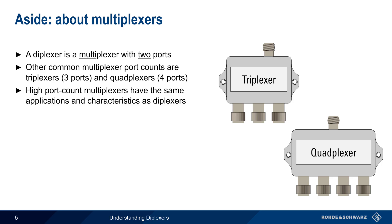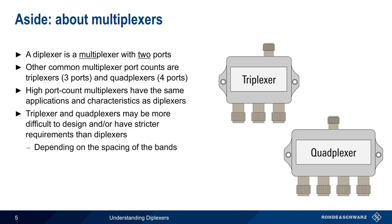However, do keep in mind that triplexors, quadplexors, etc. may be more difficult to design and or have stricter requirements than diplexors, depending on the width and spacing of each frequency band. This is because as the number of bands increases, it becomes more challenging to implement filters that can provide adequate isolation between the different bands.